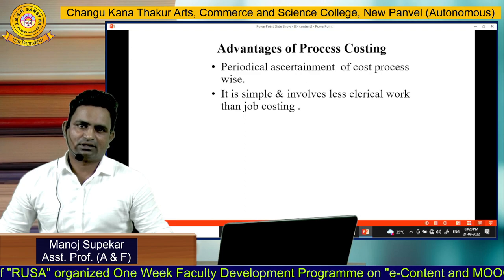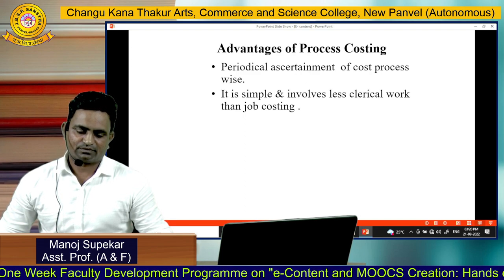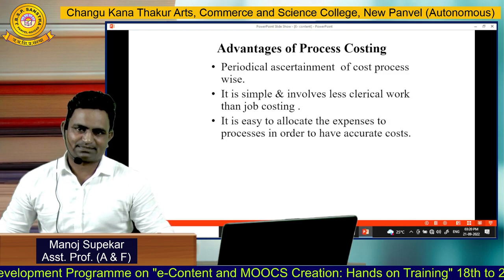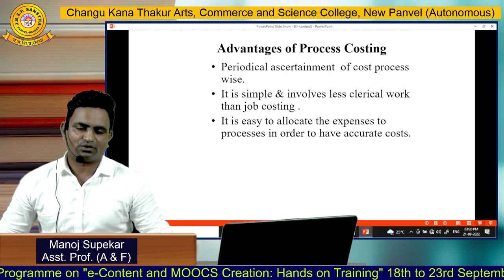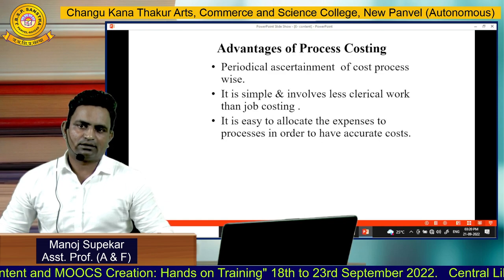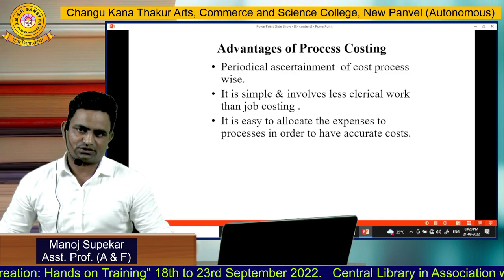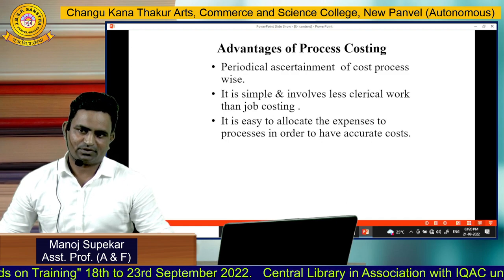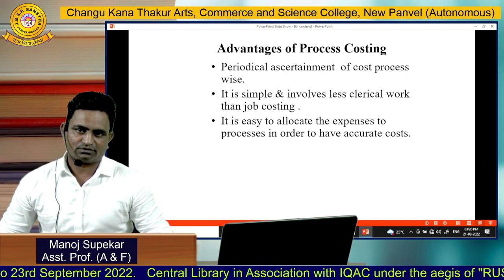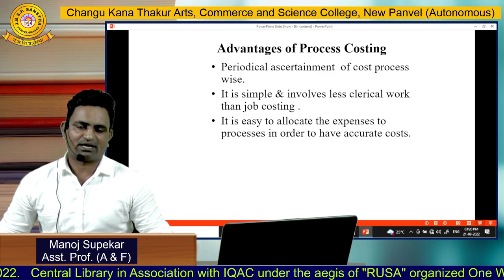Process costing has very little clerical work involved. The next advantage is that it is easy to allocate expenses to processes in order to have an accurate cost. In costing, there are two important measurement tools: method and technique. Process costing is a method of costing, and with its help we get the accurate figure of each and every good manufactured by the manufacturing concern.